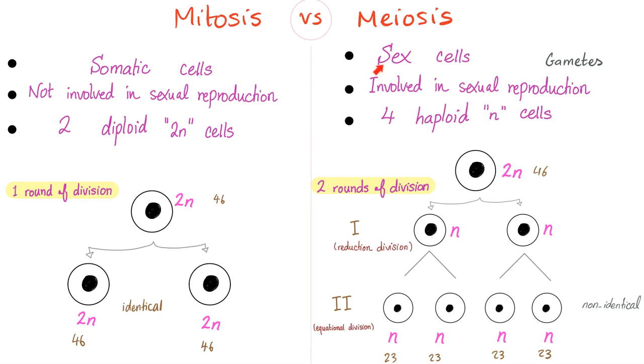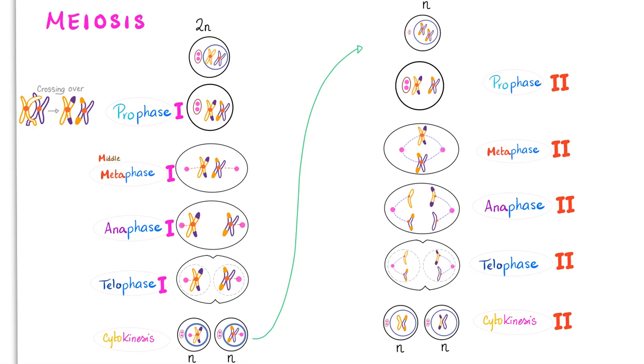If you're trying to make some gametes, you better use meiosis, man. The reduction division. Here is meiosis. We start with 2N. And then we go down. Prophase. Pro, meta, ana, telo. Pro, meta, ana, telo. And of course, this is round one. So it's called prophase 1, metaphase 1, anaphase 1, telophase 1. And then you have cytokinesis.